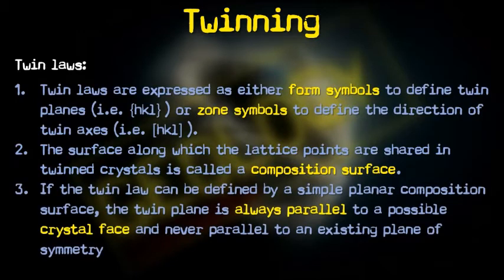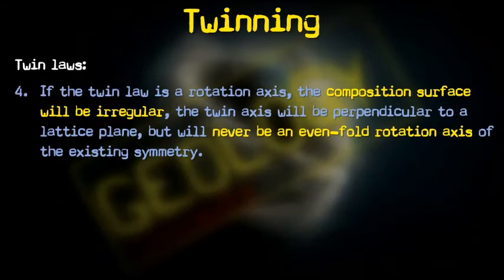If the twin law can be defined by simple planar compositions, the twin plane is always parallel to the crystal face and never parallel to an existing symmetry of the crystal. Therefore, twinning always adds to the symmetry and is always parallel to some crystal faces. If the twin law is a rotation axis, the composition surface will be irregular, meaning you cannot define a plane there and must define a twin axis. The twin axis will be perpendicular to the lattice plane and will always be an odd-pole rotation axis, never an even-pole rotation axis.